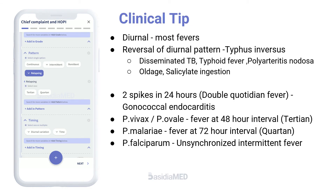In Plasmodium vivax and Plasmodium ovale malaria, fever occurs every 48 hours, so the periodicity of fever is tertian — that is, tertian malaria. Whereas in Plasmodium malariae disease, fever occurs every 72 hours — that is, quartan malaria.